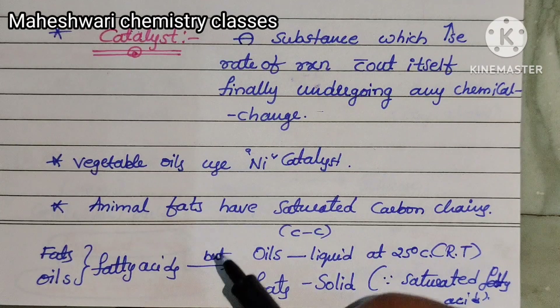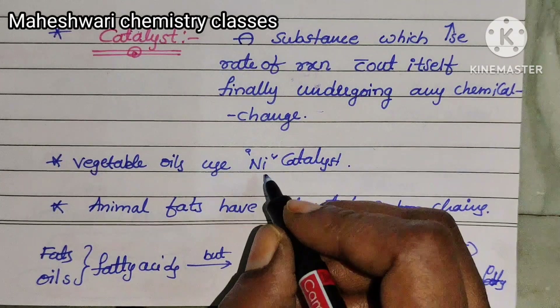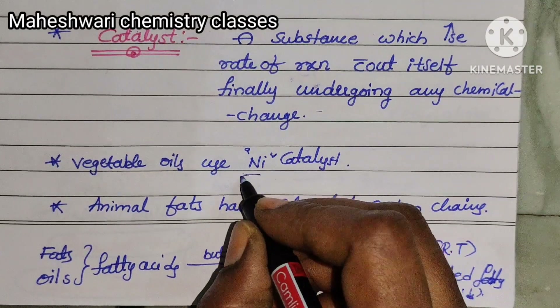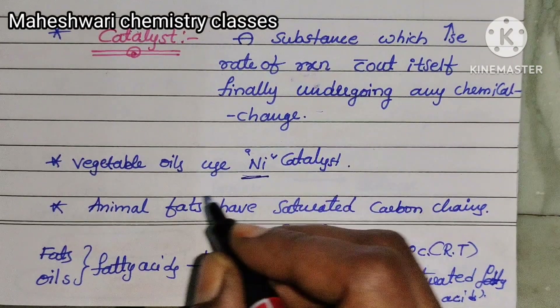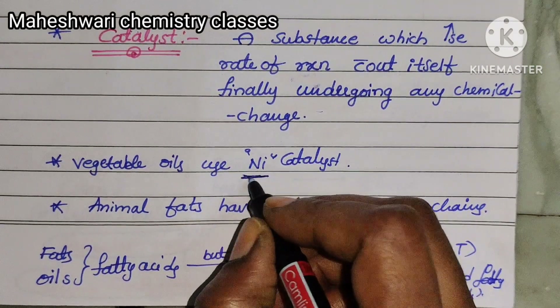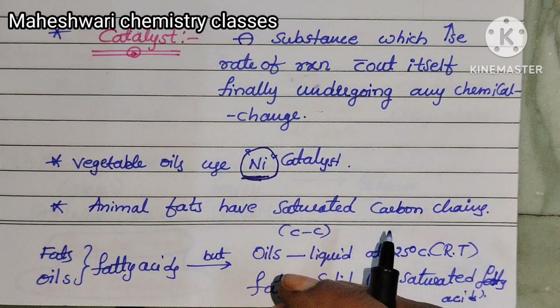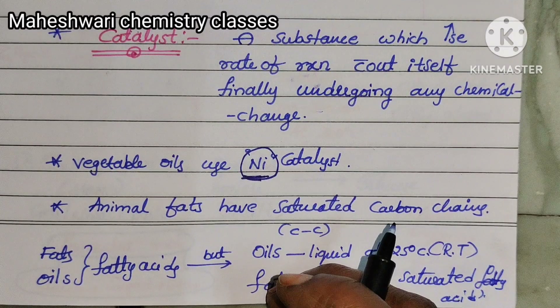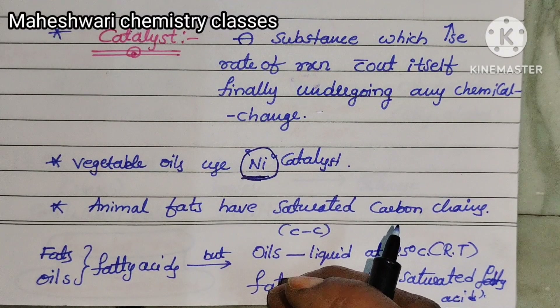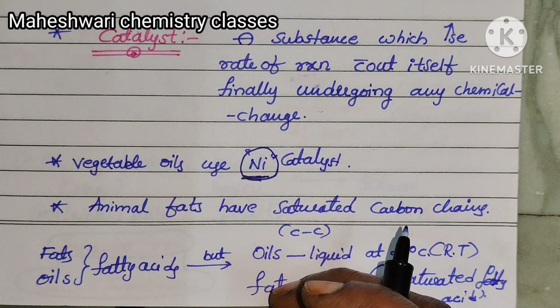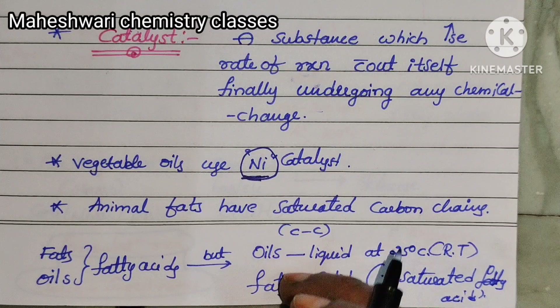Vegetable oil is hydrogenated using a nickel catalyst to produce vanaspati (dalda), which is a solid fat.